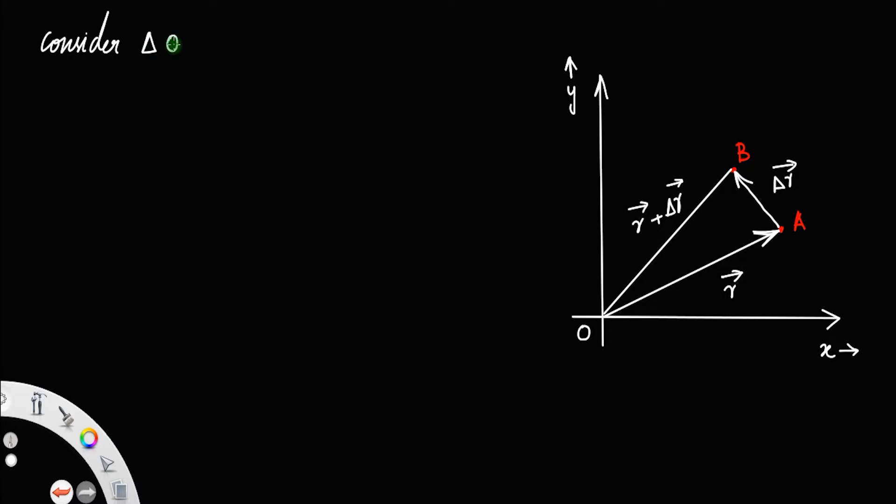Consider triangle OAB and the area of the triangle, the area of triangle OAB. Let us represent that as delta A. Since we consider area as a vector, you have to put that vector head.